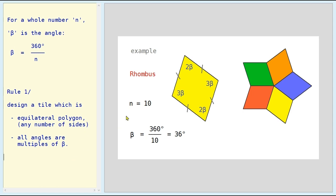Here's a simple example of a rhombus. For n equals 10, beta will be 360 degrees divided by 10 — that's 36 degrees. And here we have the angles of that rhombus. You can see that 10 beta is 360 degrees, so 5 beta is 180 degrees. So 2 beta plus 3 beta equals 5 beta, which is 180 degrees. That's like the interior angles for two parallel lines, isn't it?